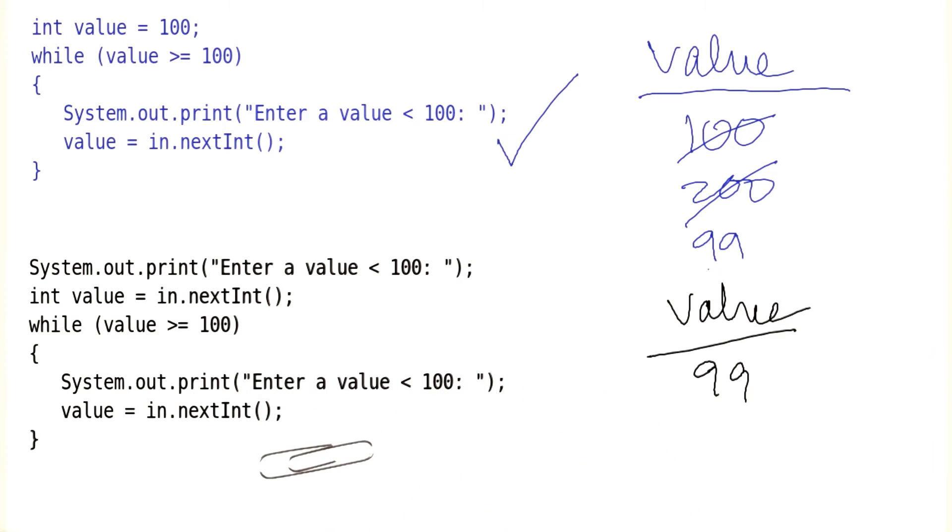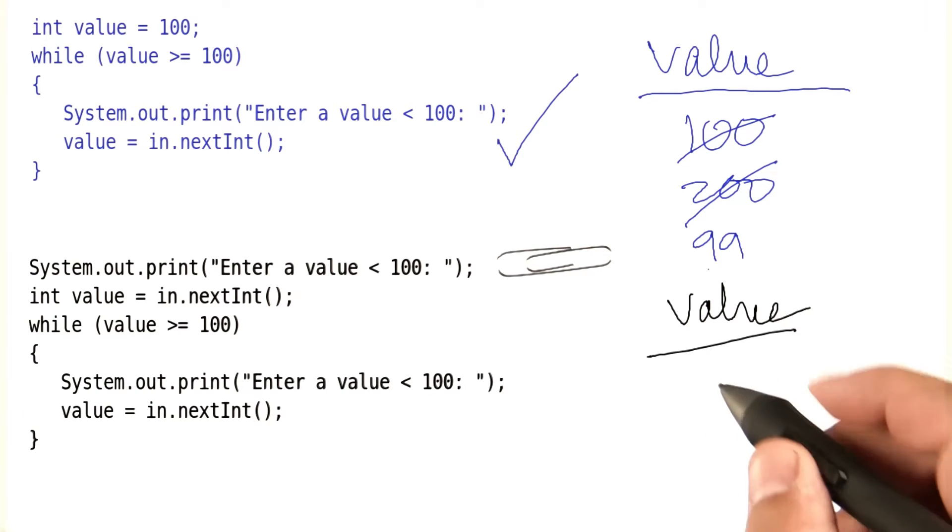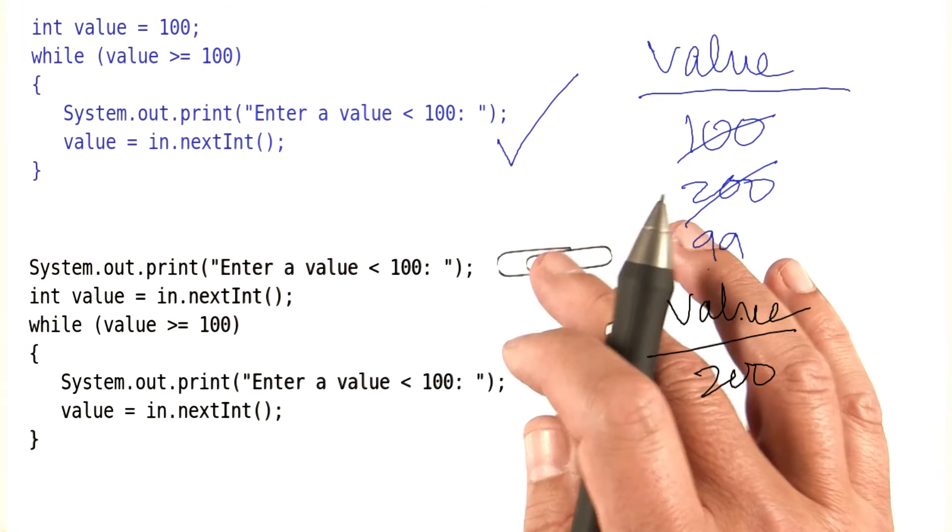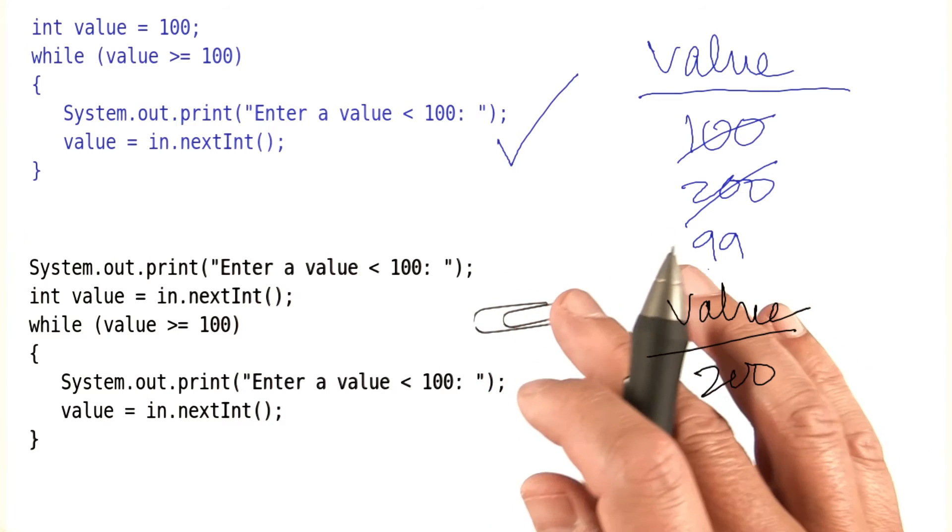So let's look at another situation where the user makes a mistake first. We're again at the top. We ask the user to enter a value less than 100. The user enters 200. Now that's greater or equal than 100.